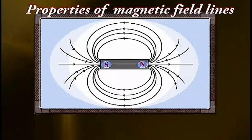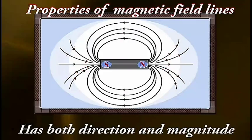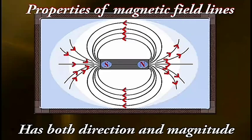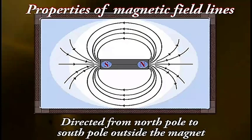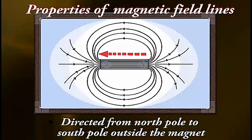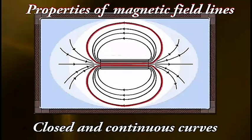Let us now discuss the various properties of magnetic field lines. A magnetic field line has both direction and magnitude and is thus a vector quantity. Outside a magnet, magnetic field lines are directed from the north pole to the south pole. They are closed and continuous curves.